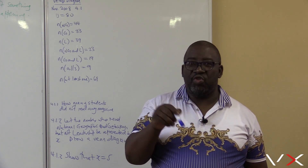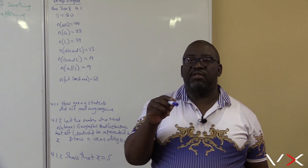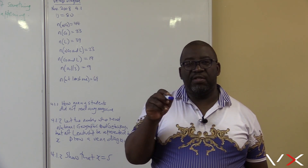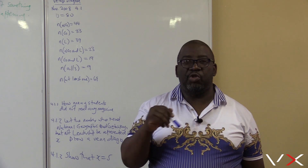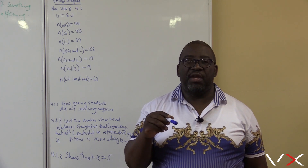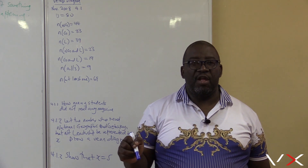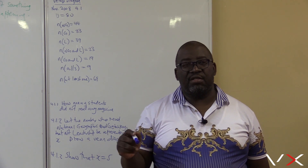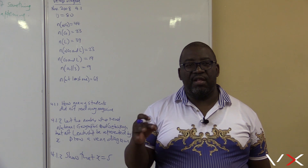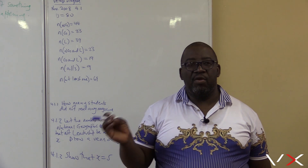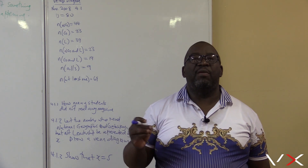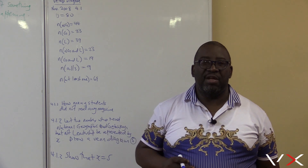Then if there's an intersection, you show that there's an intersection of two; if there's an intersection of three, you show the intersection of three. And on the bottom, outside the intersection or outside the events happening, you show the complement — those that are not happening.